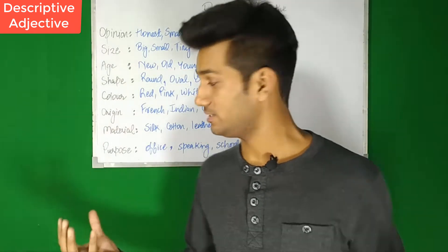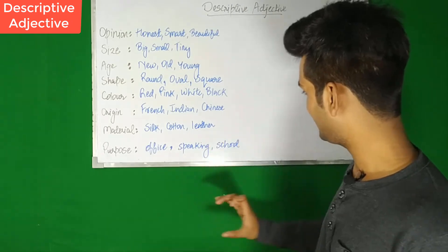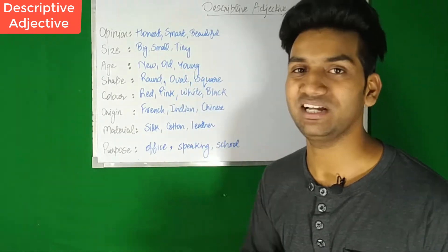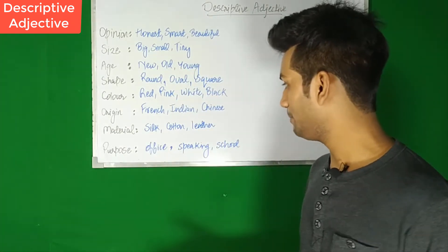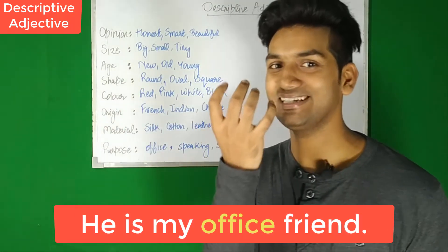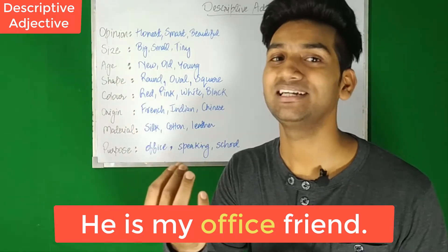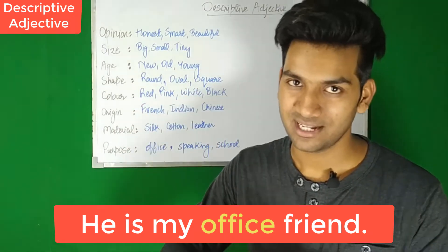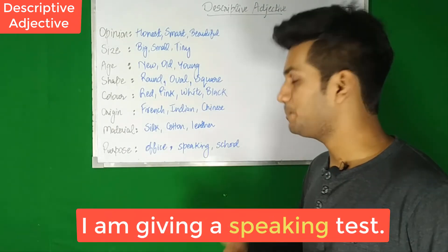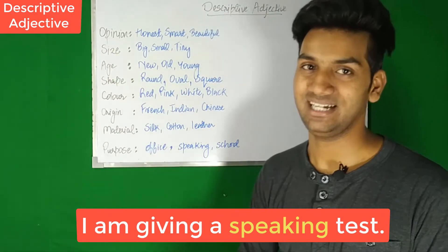For example, 'He is my office friend.' Office is generally a common noun, but here it is used as an adjective to describe the noun 'friend.' What kind of friend? An office friend. Similarly, 'I am giving a speaking test' - 'speaking' here is used as an adjective to describe the noun 'test.'